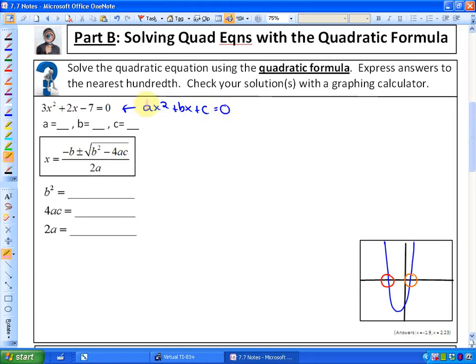It's already in the form ax squared plus bx plus c equals zero. So a is 3, b is 2, and c is negative 7.